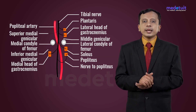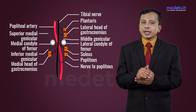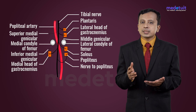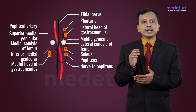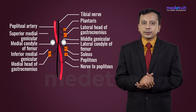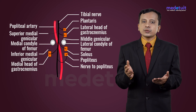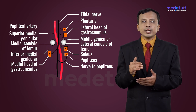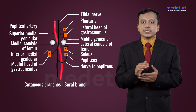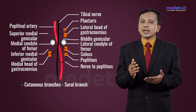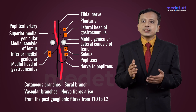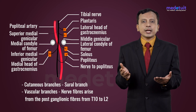The branches of the tibial nerve include muscular branches, articular branches, cutaneous branches, and vascular branches. The muscular branches supply the gastrocnemius, plantaris, soleus, and popliteus muscles. The nerve to popliteus also supplies tibialis posterior, the interosseous membrane, and the superior and inferior tibiofibular joints. The articular branches, also called genicular branches, include the superior and inferior medial genicular branches and the middle genicular branch, which supply the knee joint. The cutaneous branch is the sural nerve, which supplies the posterior aspect of the leg. The vascular branches arise from postganglionic fibers from T10 to L2, travel along the vessels, and provide vasomotor supply to the popliteal vessels.